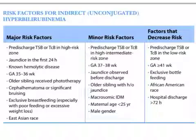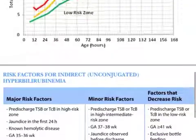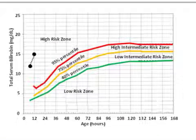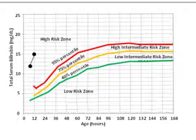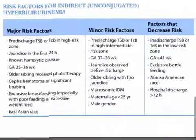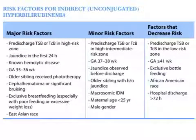Factors that decrease the risk: pre-discharge TSB or TCB in the low risk zone — that is above the 40th percentile but less than the 75th percentile. For example, if the baby is born and at 60 hours of age has a bilirubin of around 10 mg/dL, that falls in the low intermediate risk zone. Other factors: gestational age of 41 weeks or more, exclusive bottle-fed infant, African American race, and hospital discharge after more than 72 hours.